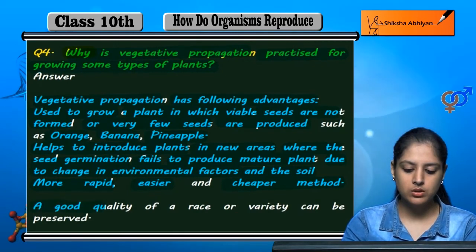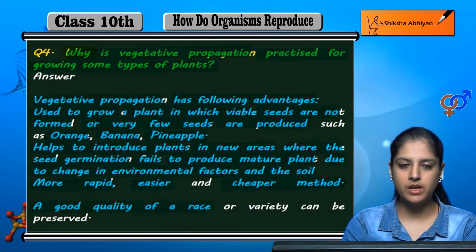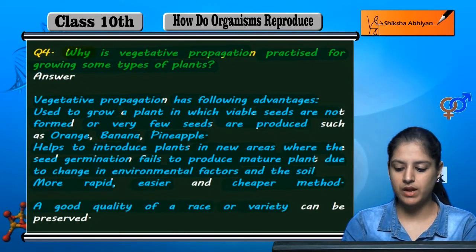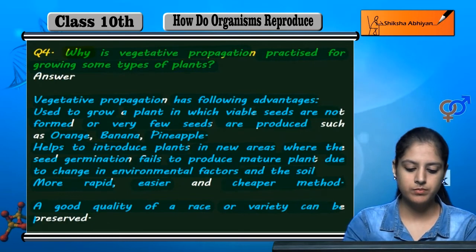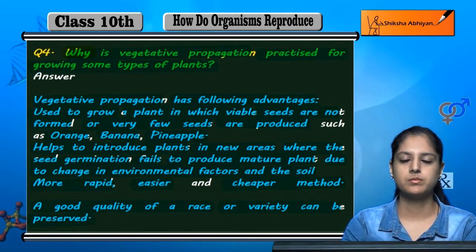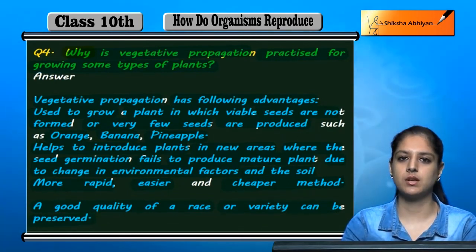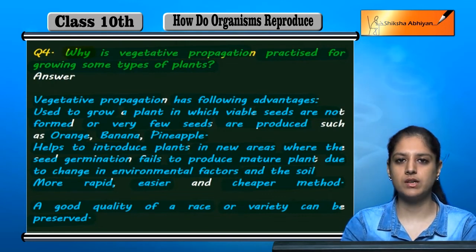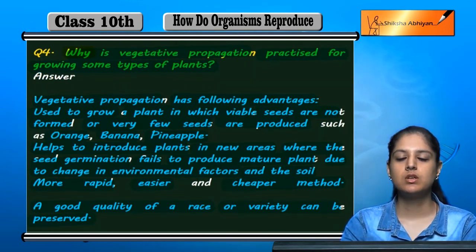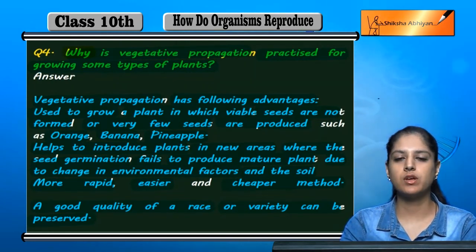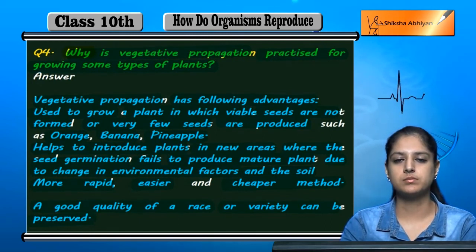A good quality of a race or variety can be preserved. These are some of the advantages of vegetative propagation, due to which we can grow some plants.